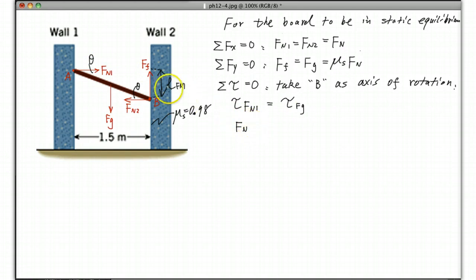It should be Fn equals L, where L is the length of the board. Fn times L, then should be sine theta. So L times sine theta should be the lever arm for Fn. And look at Fg.